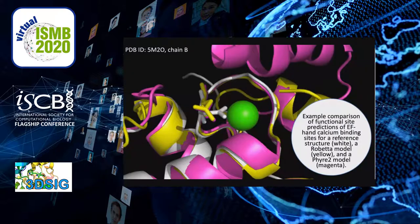In order to illustrate this methodology, consider an example of a functional site prediction of an EF-HAND calcium binding site, which represents one of the 606 feature reference models utilized.